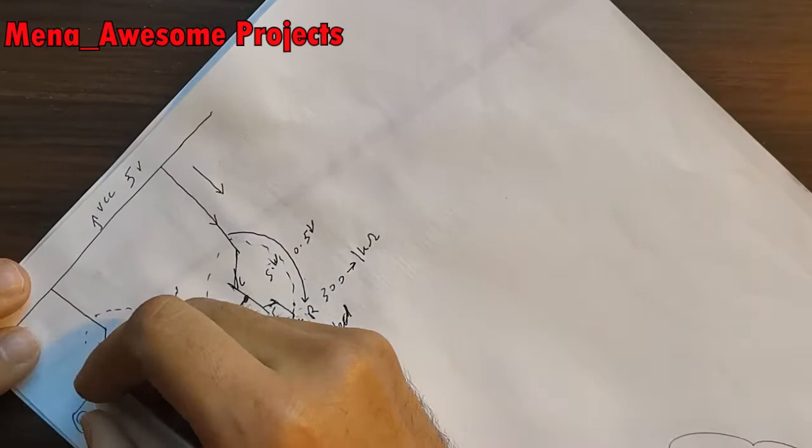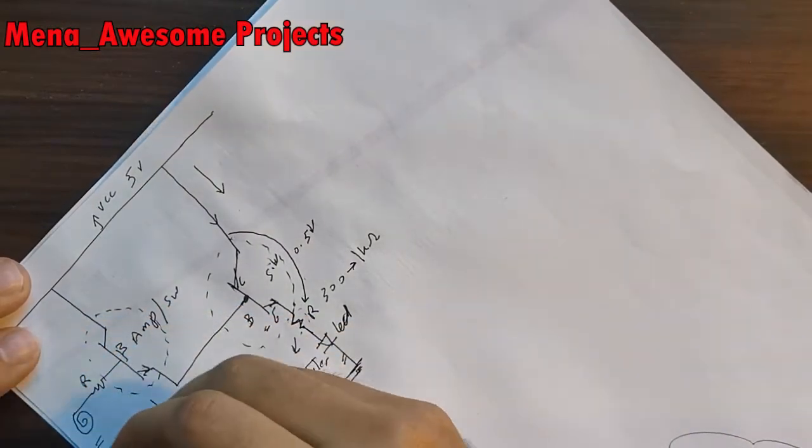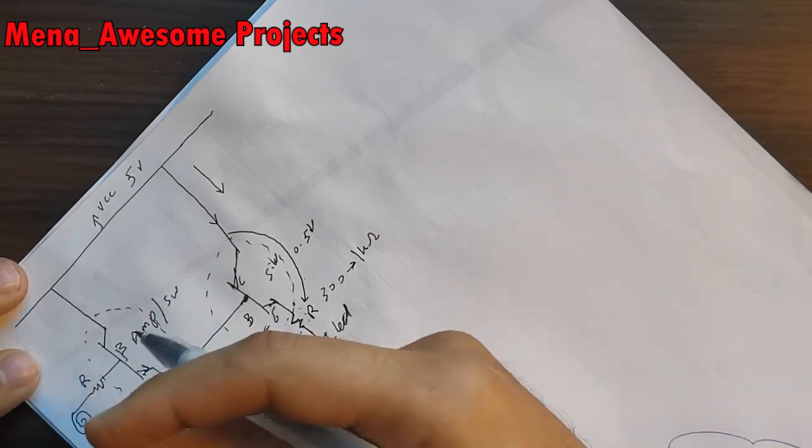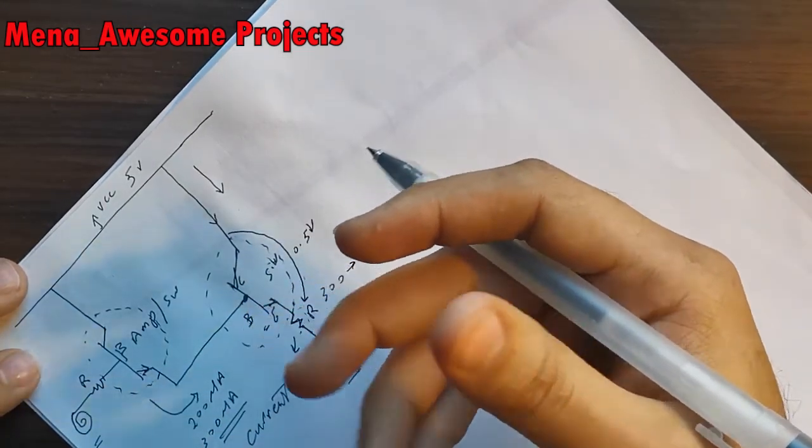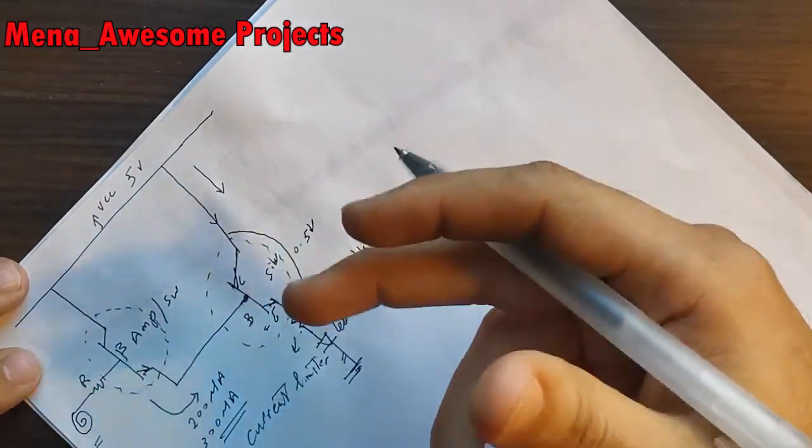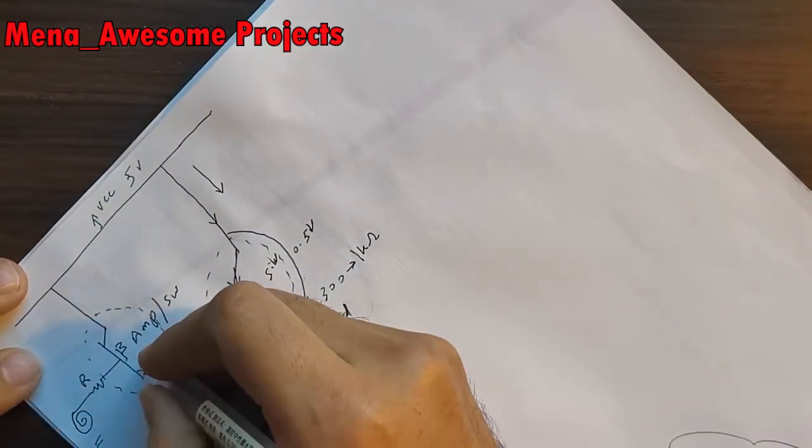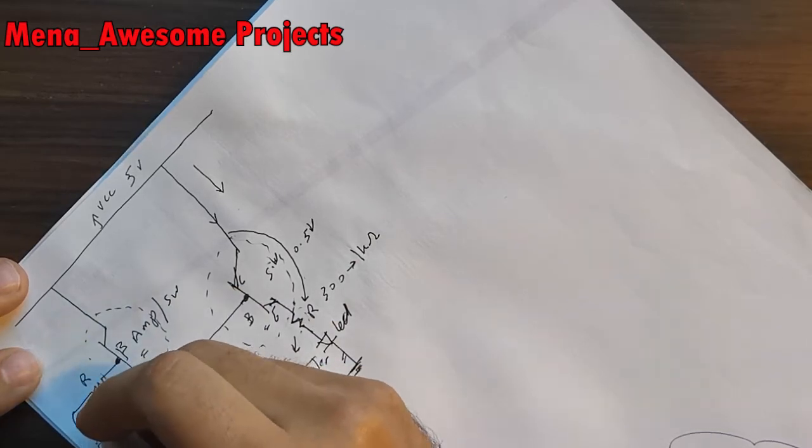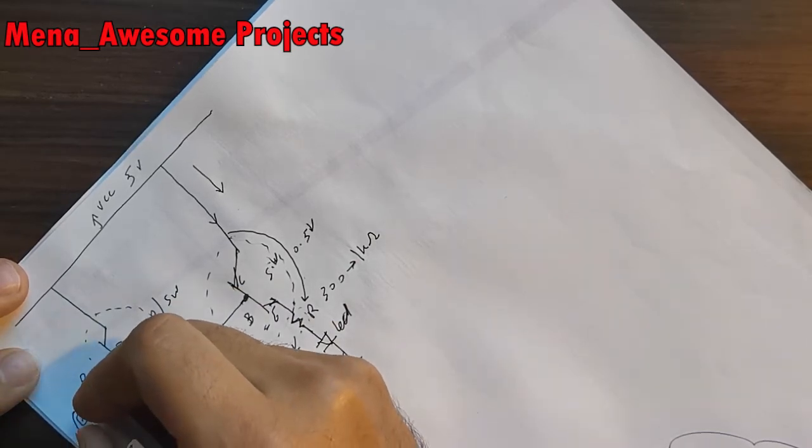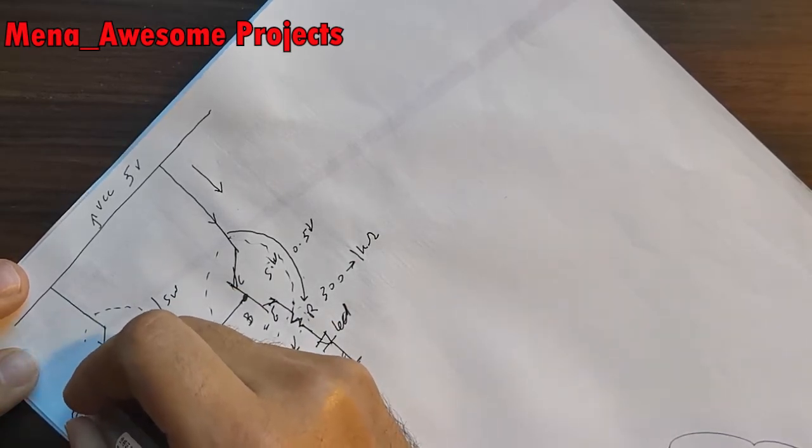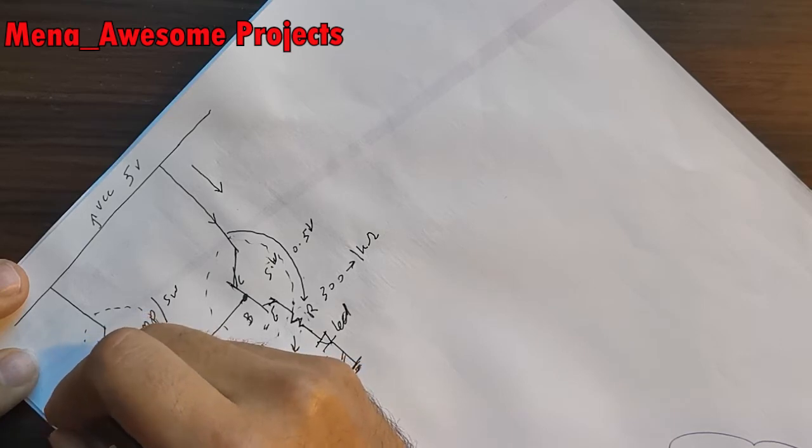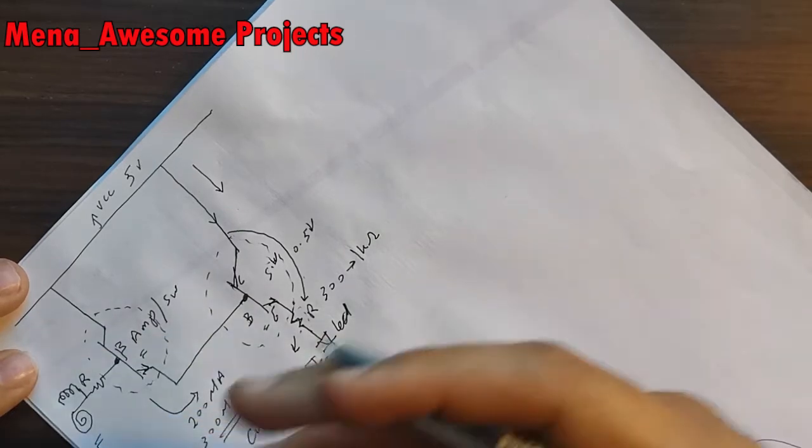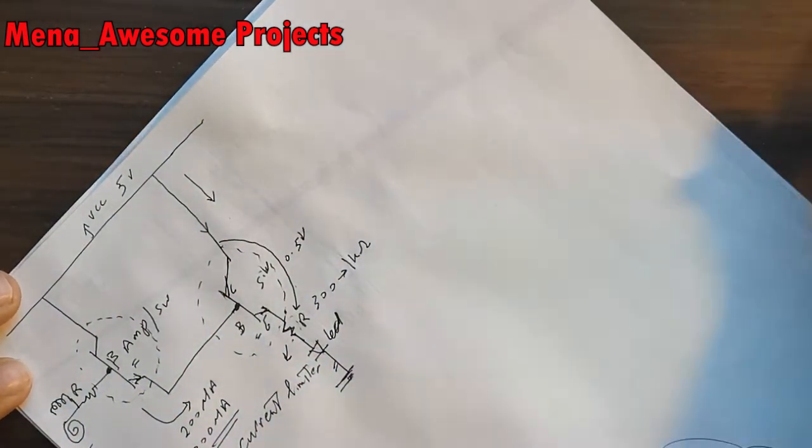And this resistor also we use it so in case if we're wearing some silk, we have some static charge in our body. This static charge sometimes became very high and can burn our transistor, the base of transistor. And sometimes it's better also to connect a coil here in this point.